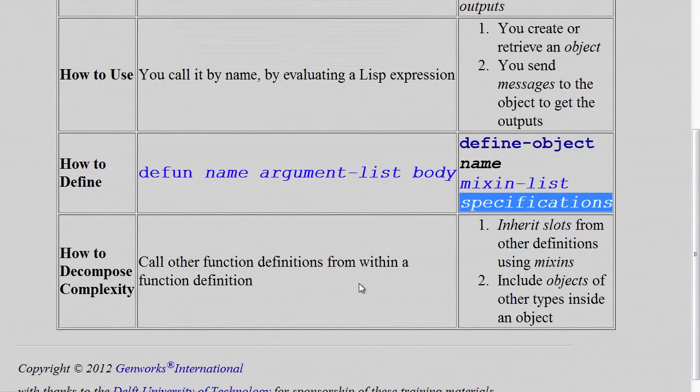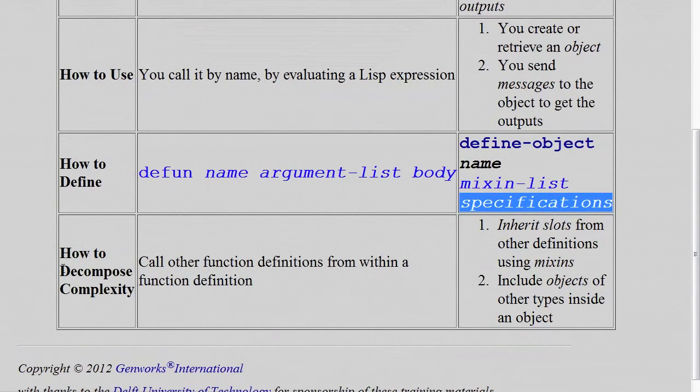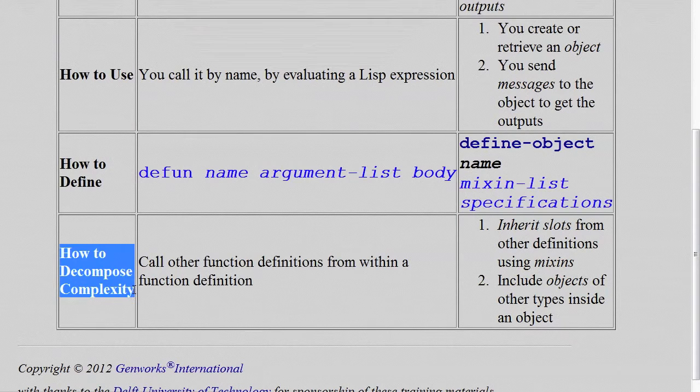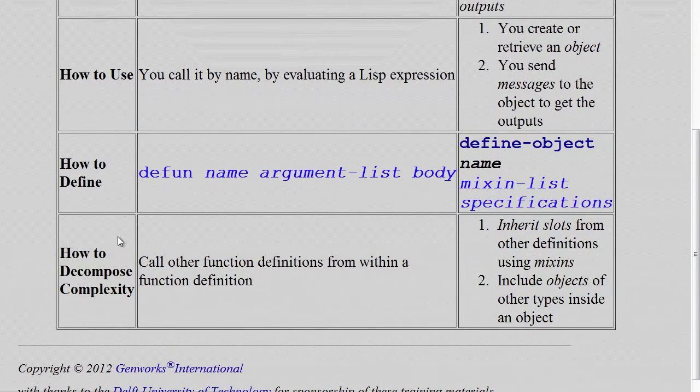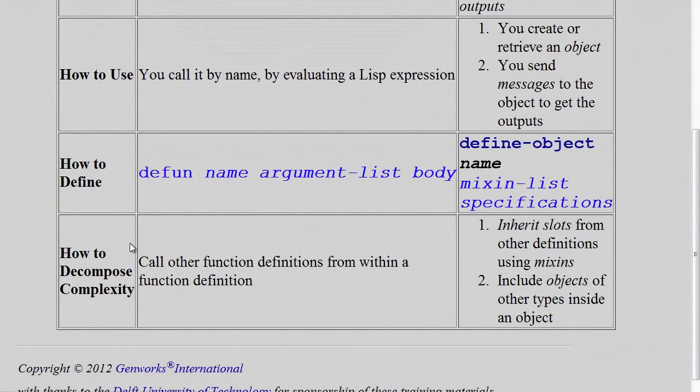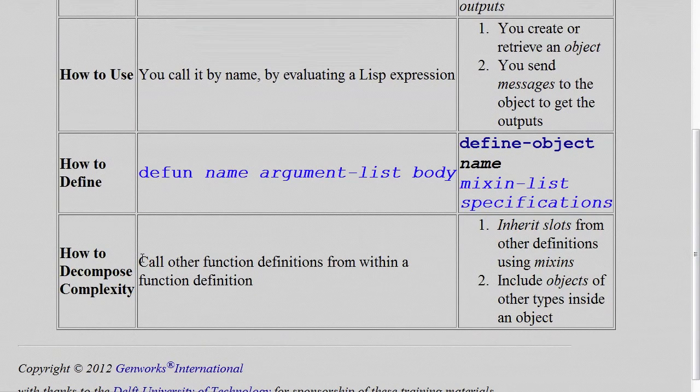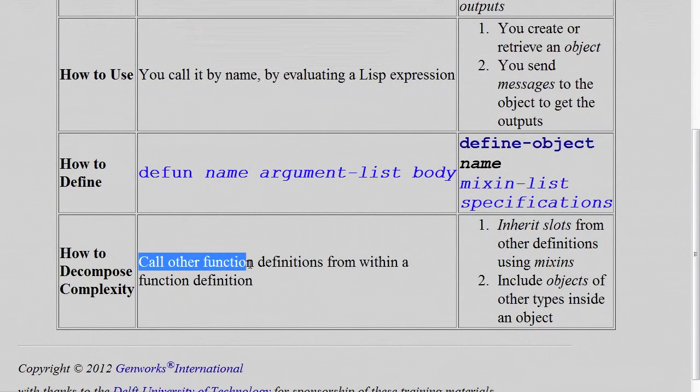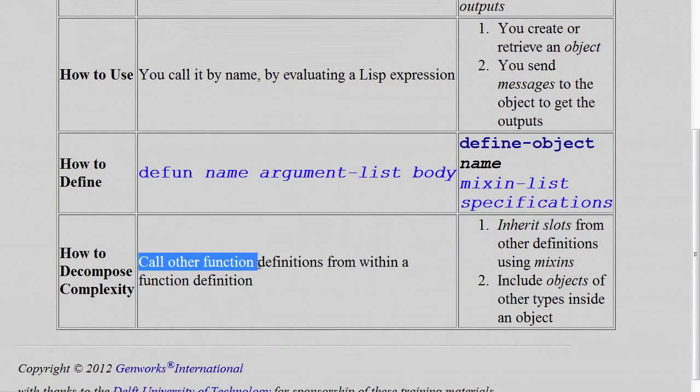Final difference is, how do you decompose complexity? In a complex or even moderately complex system, it's very important to decompose the complexity somehow, so that you can work on manageable little chunks. In functional programming, you simply have functions that call to other functions. So you have one function, and you keep it relatively short by having it call other functions, instead of including all of the logic for everything that you want to do inside one huge function.